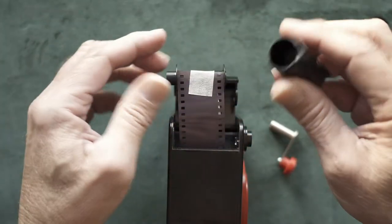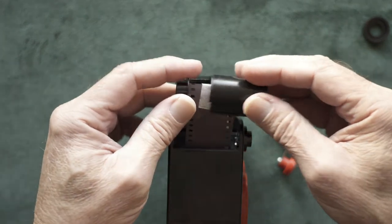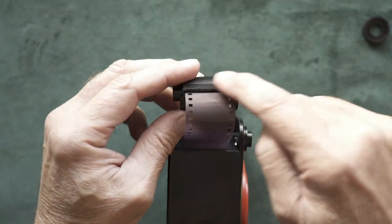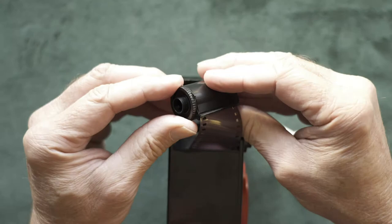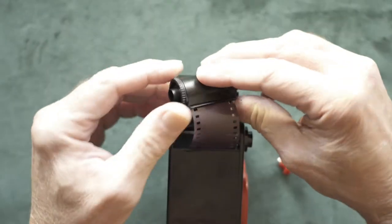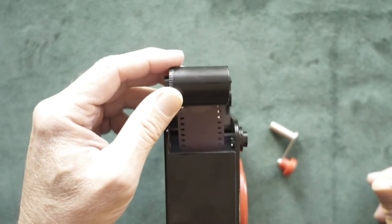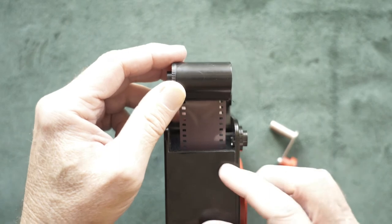So now slide your canister back on, make sure you get it through the felt slot. I got that tab right there. Now remember, don't pull out any more film than you have to because you're just wasting it—it's going to expose it.